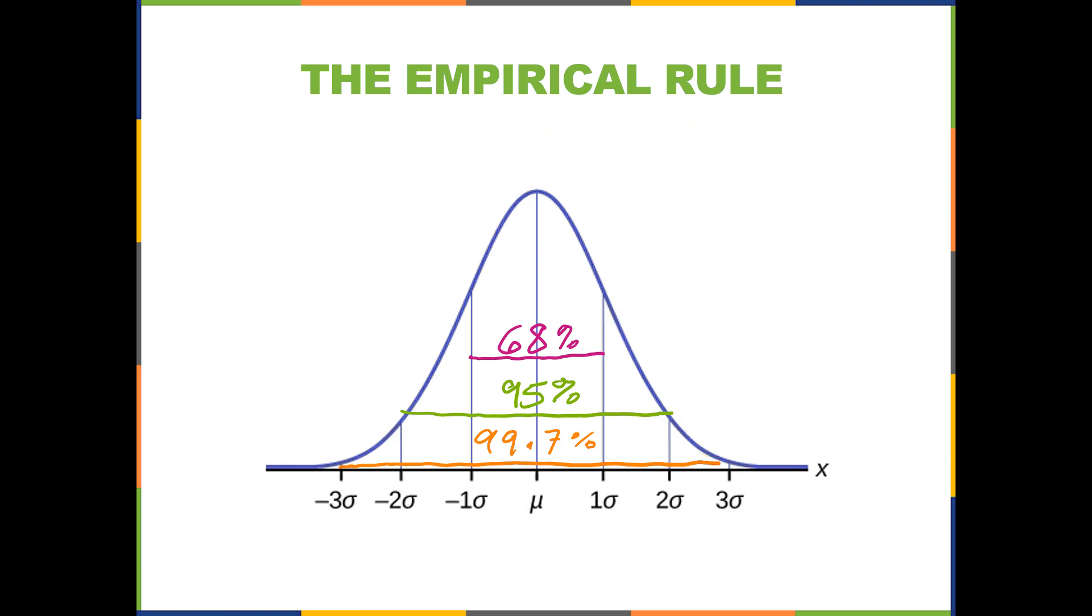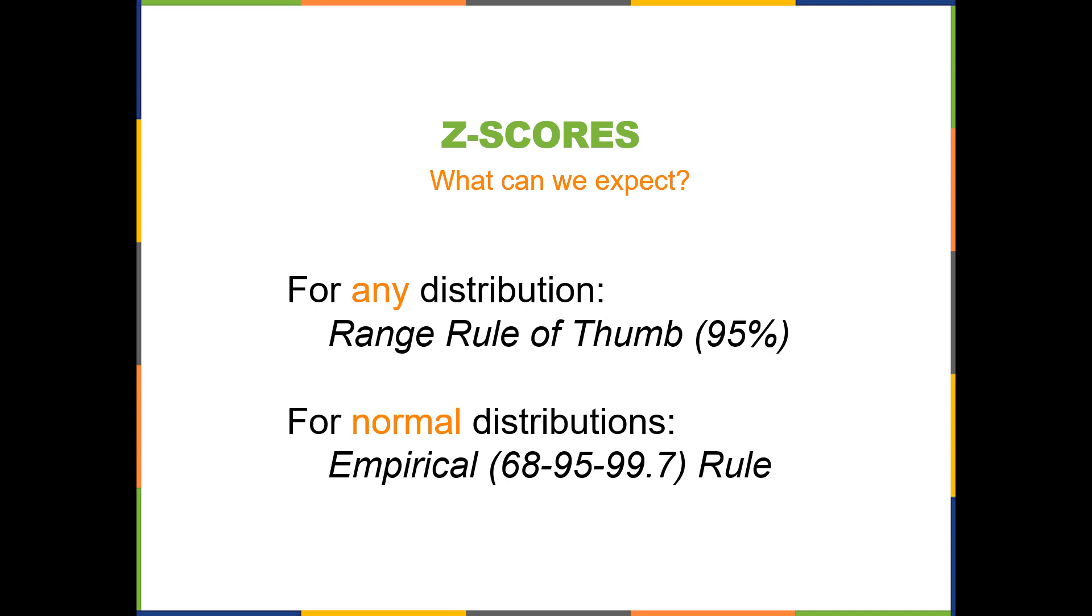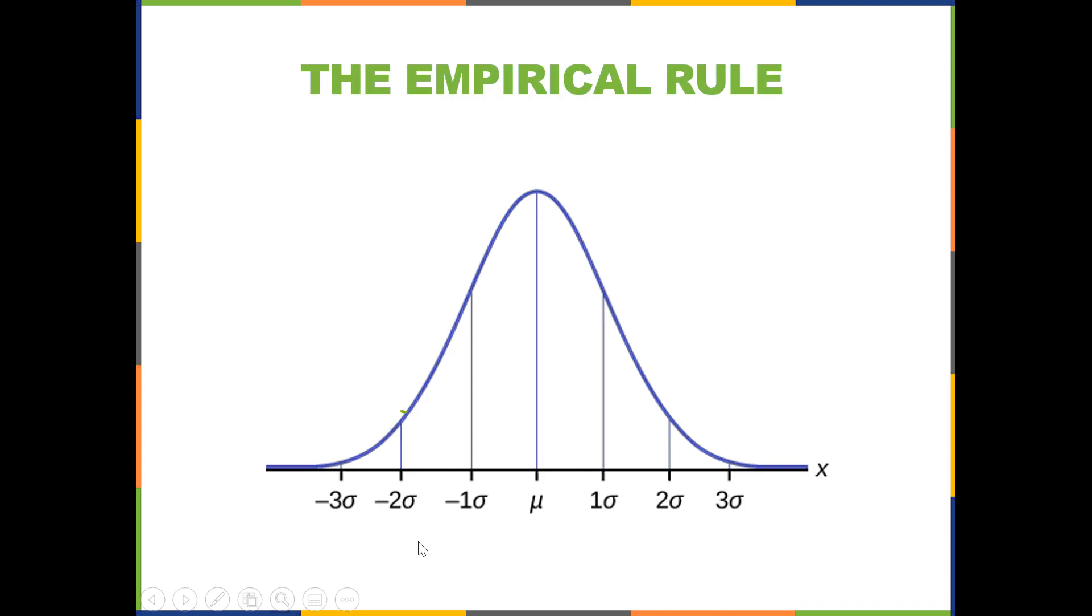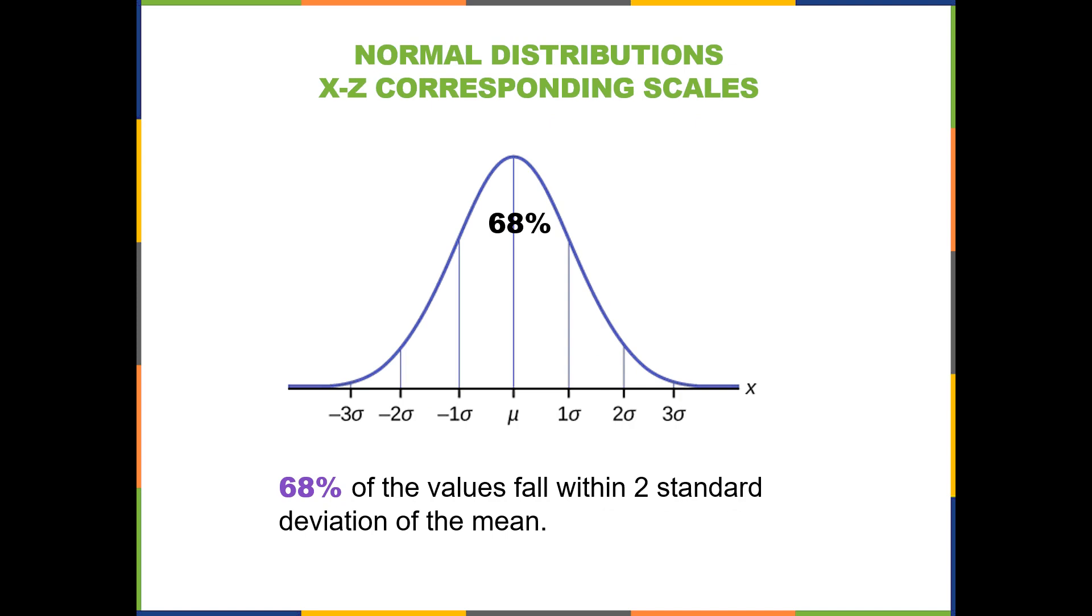If it's not a bell shape, you can only use the range rule of thumb. There is another rule called Chebyshev's theorem that we're not covering in this class, so if you want to look it up, it's also another convenient way to have more insight on distributions that are not bell shaped.